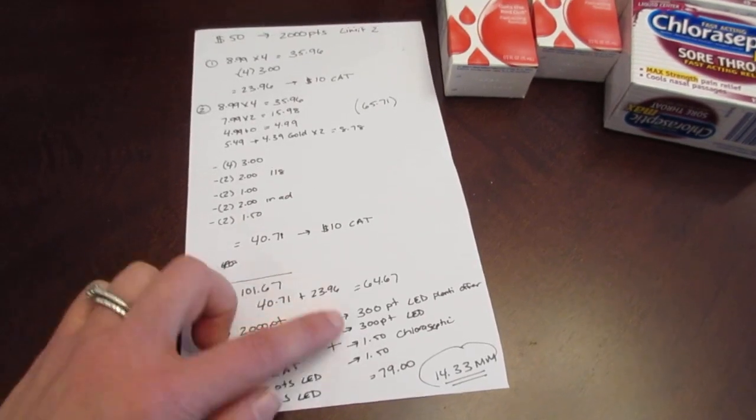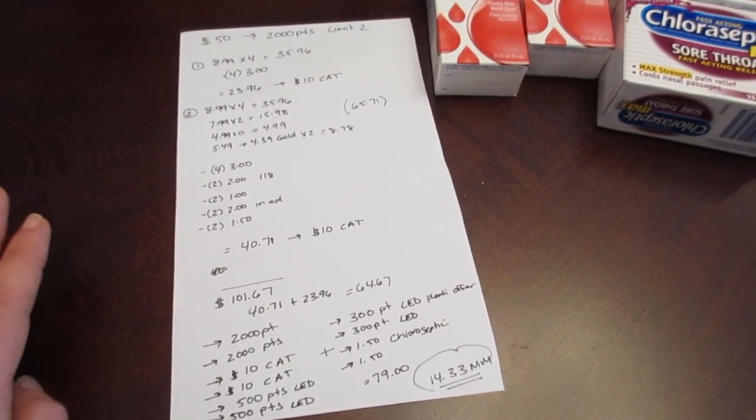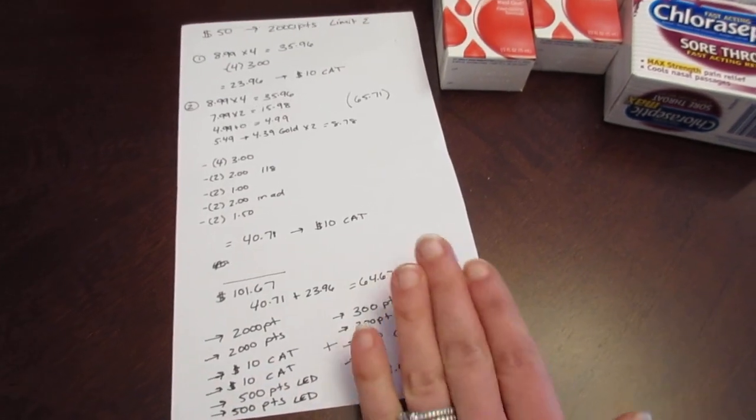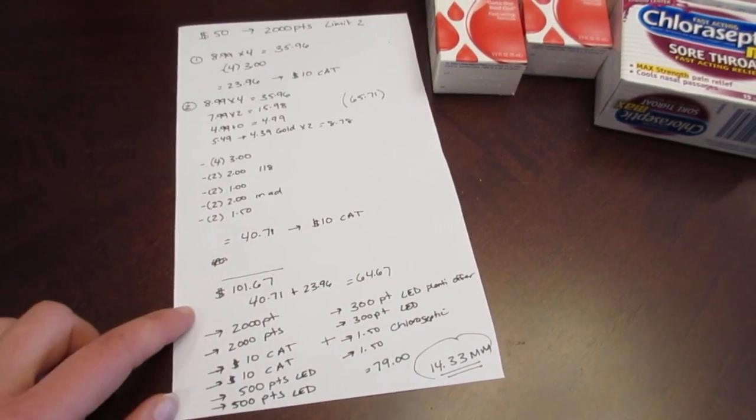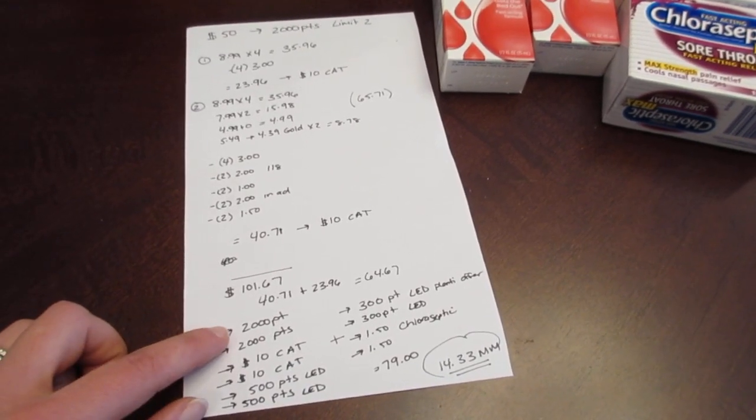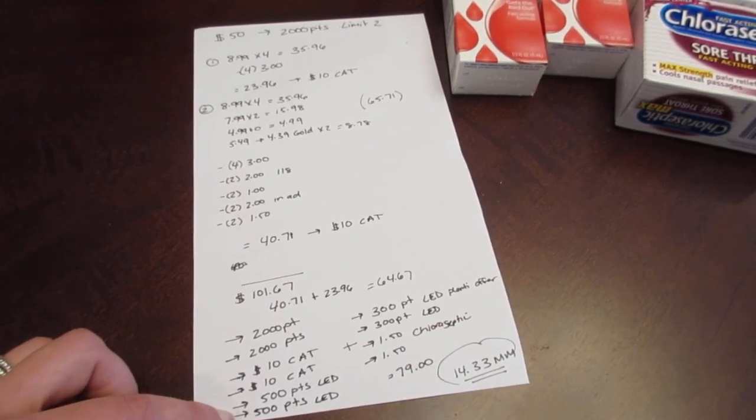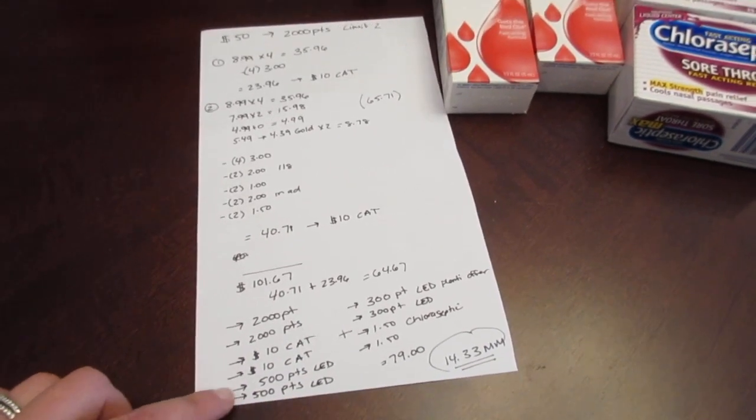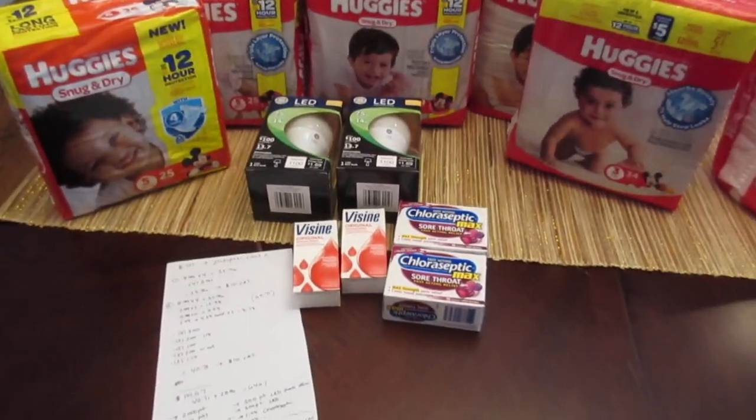Now, even if you don't have these Plenti offers, I know not everybody got those. My other card didn't get a single one. So even without these Plenti offers, it's still a moneymaker because you pay $64.67, and you get back $70. So it's still a moneymaker even without those Plenti offers. So that's my first deal. I'm going to make a second video for the other card that I used.